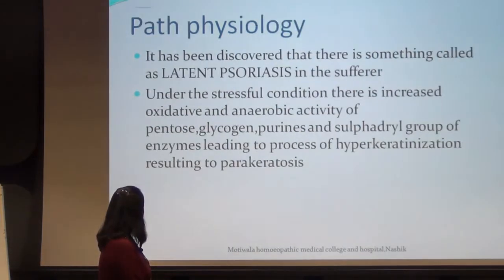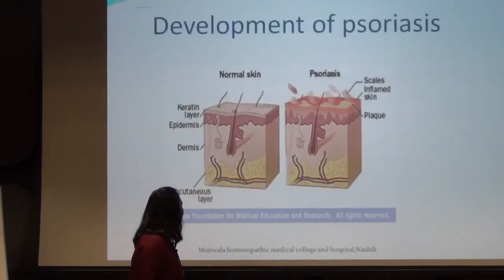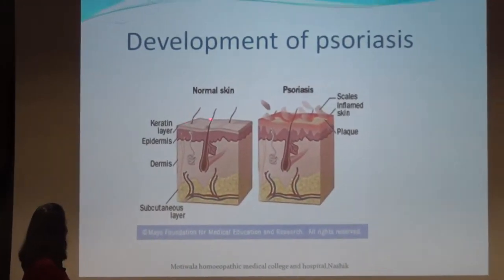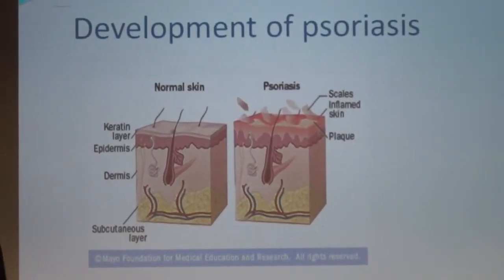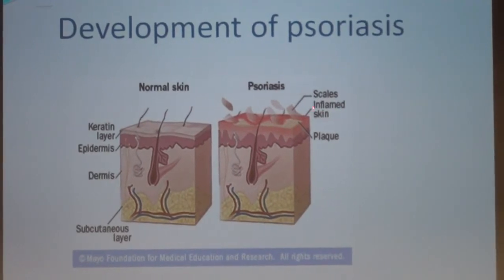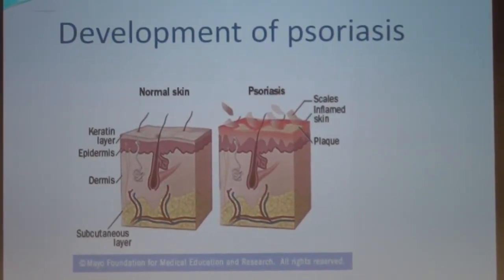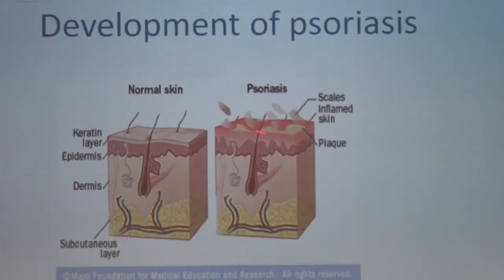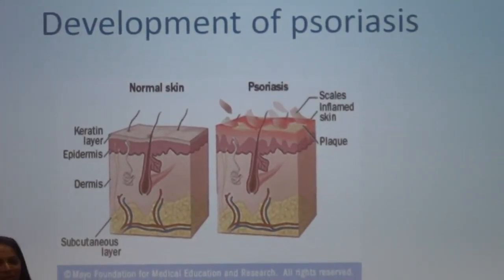Now let us look at a picture. You can see the normal epidermal layer compared to the epidermal layer in psoriasis, where there is thickening because of edema and flaking because of parakeratosis.